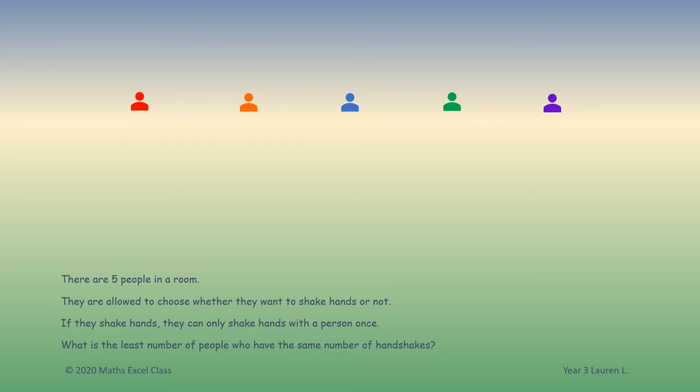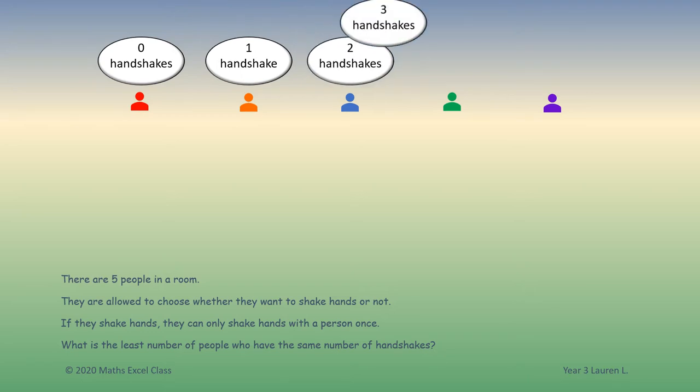Therefore, I have these five pigeonholes: zero handshakes, one handshake, two handshakes, three handshakes, and four handshakes.